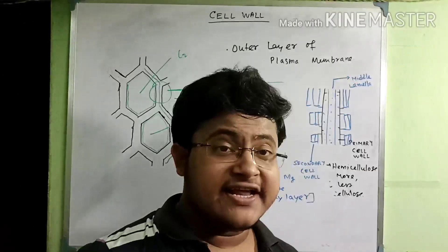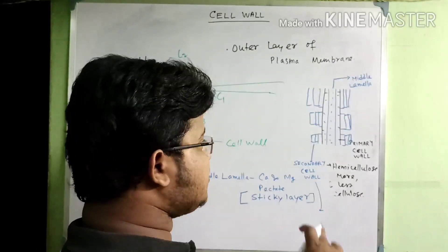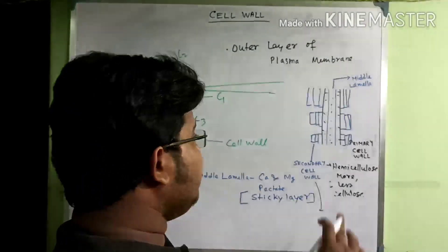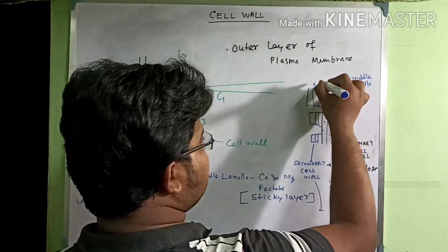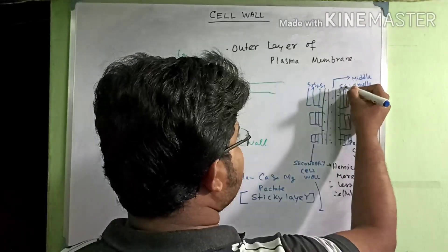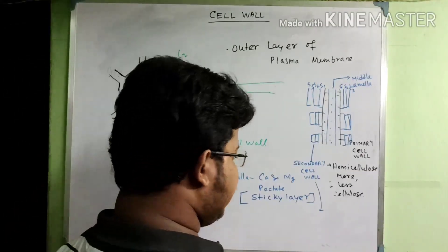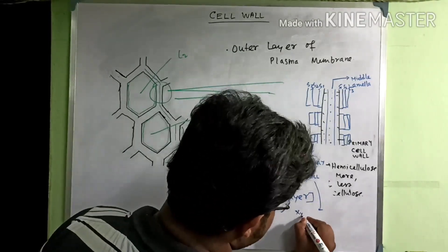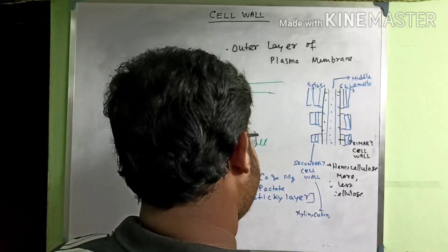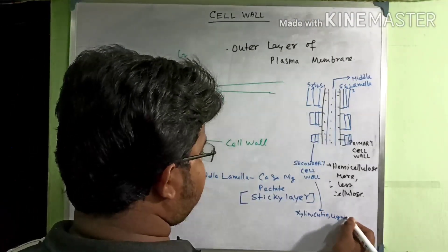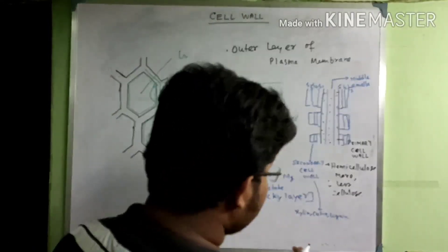The secondary cell wall is composed of extra substances which give mechanical support and help maintain the shape of the plant. They are present as the S1, S2, and S3 layers. These layers are actually made up of xylan, cutin, and lignin.